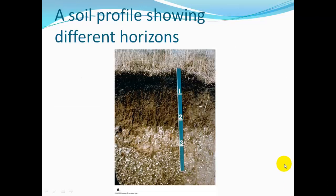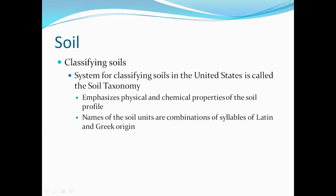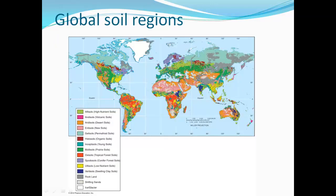Here's another picture showing a soil profile with different horizons. To classify soils in the United States, we use a soil taxonomy that emphasizes physical and chemical properties of the soil profile. Names of soil units are combinations of Latin and Greek syllables. Some global soil types include andisols or volcanic soils, aridisols or desert soils, and entisols or new soils, just to name a few.